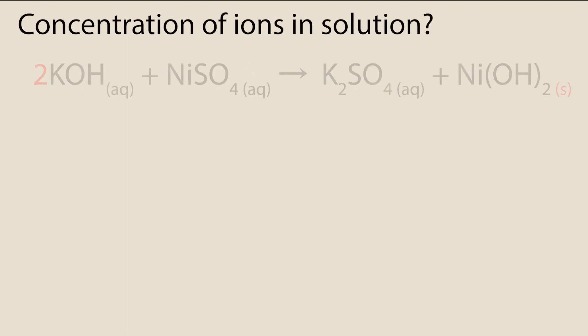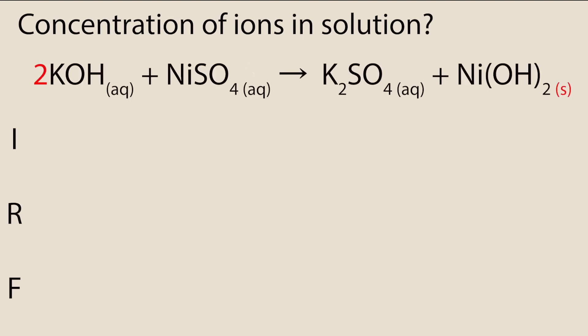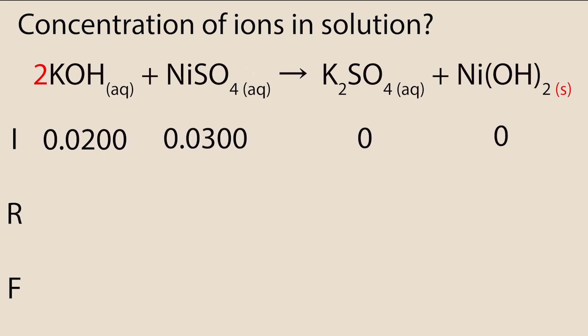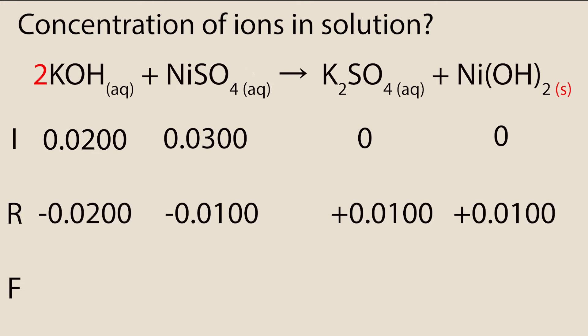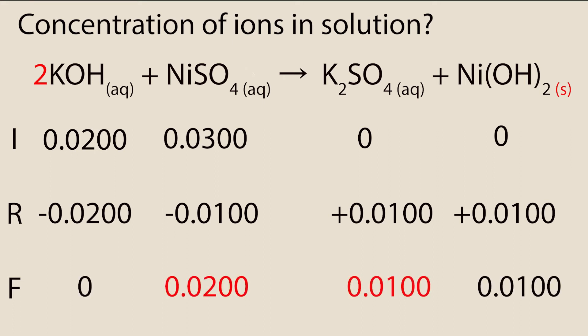We can use the balanced equation along with an IRF table to calculate the number of moles of species at the end of the reaction. IRF means initial, react, final. Typically the numbers used in IRF tables are in moles. We calculated the initial amounts of each reactant at the beginning; there are no products formed at the start of the reaction. We know that potassium hydroxide is the limiting reagent, so it gets fully consumed — meaning all of it reacts and there is none left at the end. From there, you must use the balanced equation and mole ratios to calculate the other values.